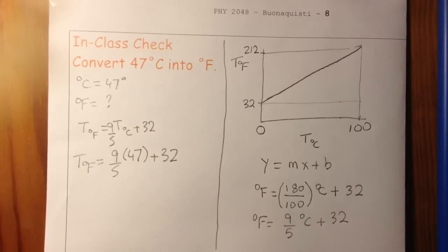And remembering that an awful lot of mistakes are made during calculation work. What I do is I say 9 times 47, enter, divided by 5, enter, plus 32, enter. And I get 116.6.